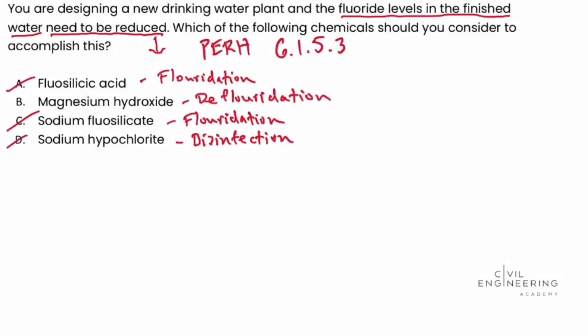That leaves us with answer choice B, magnesium hydroxide, which would be what we would use to lower the fluoride levels in the finished water.